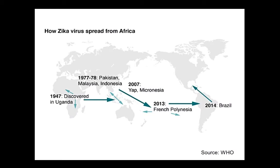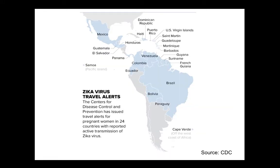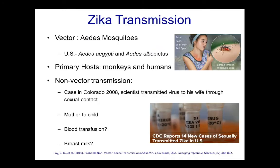This maps the history of Zika virus spread from Africa — working its way with sporadic cases in Pakistan, Malaysia, Indonesia, the major Yap Island outbreak in 2007, the French Polynesian outbreak in 2013, the Easter Island outbreak, and then beginning in 2014 and 2015 cases in Brazil. This is current CDC data for prevention and travel alerts for pregnant women in 24 countries that currently have active transmission of Zika virus, involving a major component of Latin America.